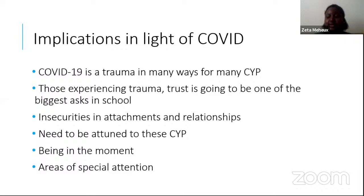Louise Bomber mentions six areas that require special attention in children and young people who have experienced numerous adverse childhood experiences and relational trauma, and as COVID is a trauma, this is also relevant. Those six elements are: relationships with others, nutrition, sleep, mindfulness, breathing, and exercise. They all feed into our overall mental health. Depending on your role in supporting children and young people, you'll be able to have more of a direct impact on some more than others, but it's really important that everyone has an awareness of these and can promote them to children, their families, and everyone else supporting them.